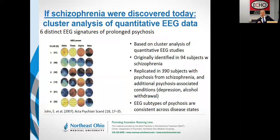If we do brain imaging — specifically EEG — we would find six different electroencephalographic signatures. The figures shown are brain electrical activity maps showing power in frequency bands: delta, theta, alpha, and beta. The color shows higher or lower voltage within those band wavelengths. The point is that there are six discernible patterns of EEG distortions amongst people with schizophrenia, and you see the same breakout of EEG patterns in people that have non-schizophrenic psychoses as well.